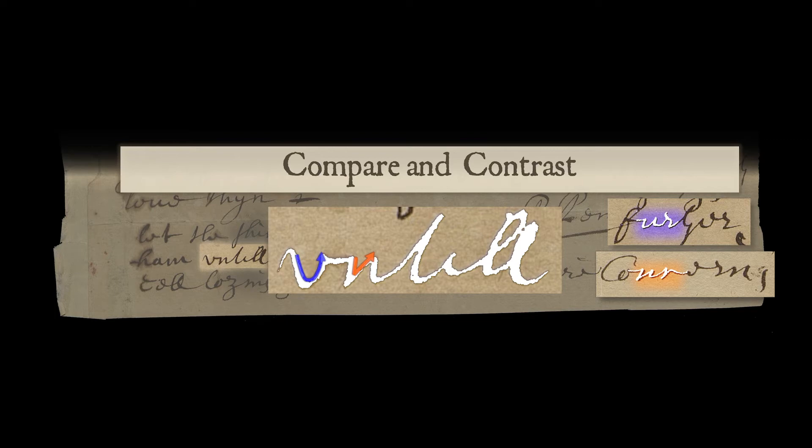Contrasting the incorrect R against correct instances of R demonstrates the reason for misidentification: modern ideas of a letter's shape. The compare and contrast method helps train your transcriber eye to recognize instances of potential misidentification and, when necessary, to override modern concepts of letter shapes.